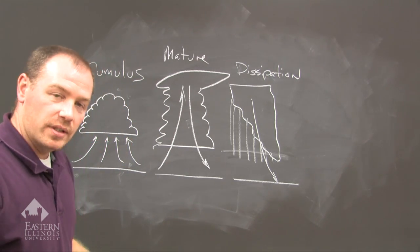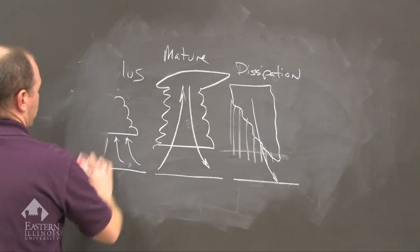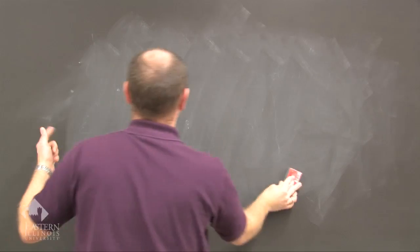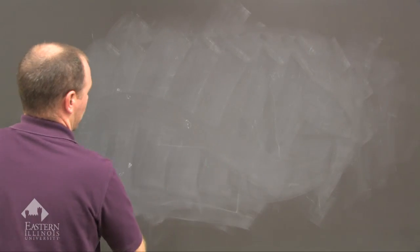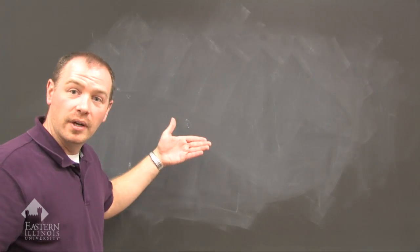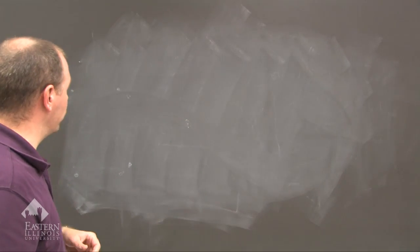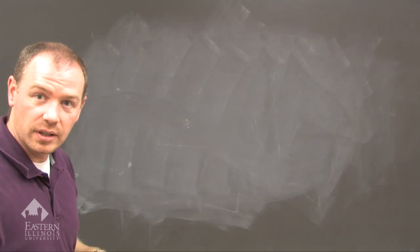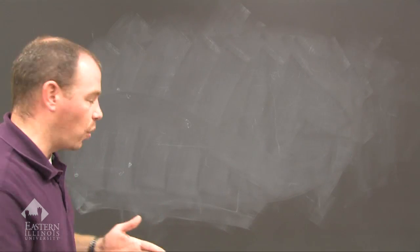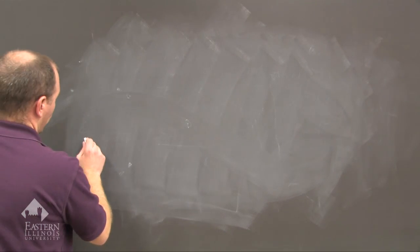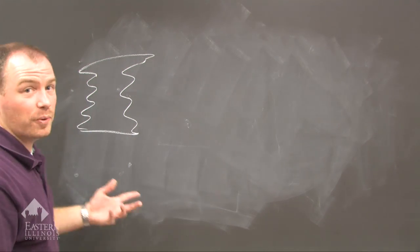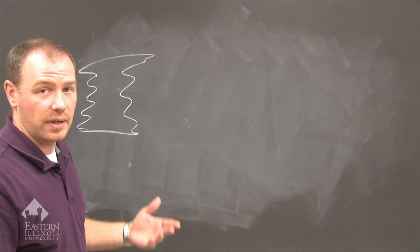Tornado development is in four stages. We already have achieved the cumulus stage of thunderstorm development. Now we're talking about the mature stage of basic thunderstorm development, and at that point we go through four stages of tornado development. We begin with the mature stage of the thunderstorm — a supercell. This has to be a supercell.